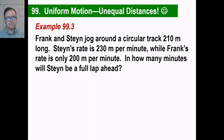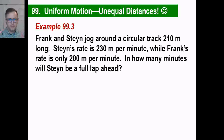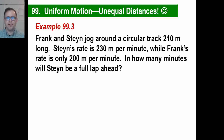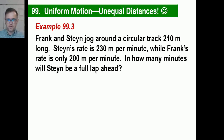Let's try one last one. Frank and Stein jog around a circular track 210 units long. Stein's rate is 230 per minute, Frank's is 200 per minute. How many minutes until Stein is a full lap ahead? That sounds complicated, but let's pick it apart. There's a rate for Stein and a rate for Frank.